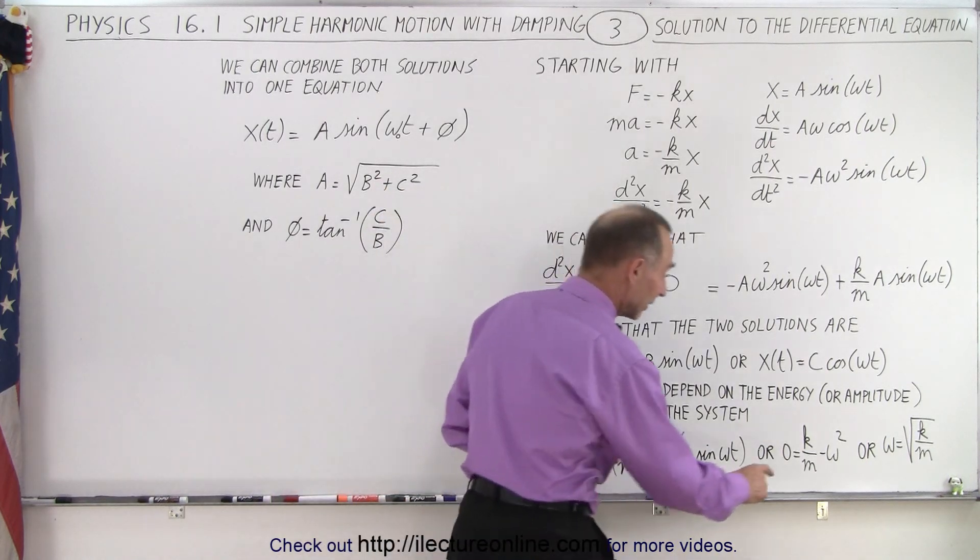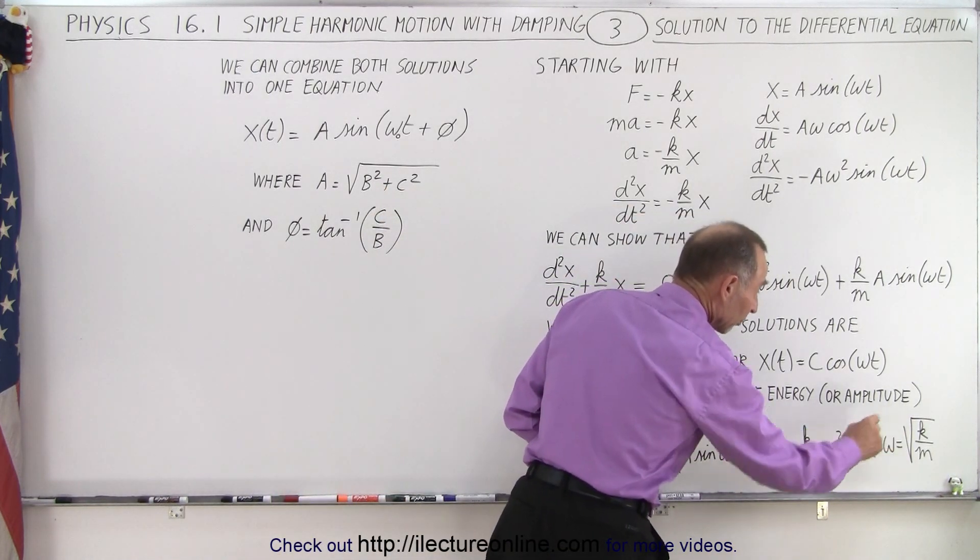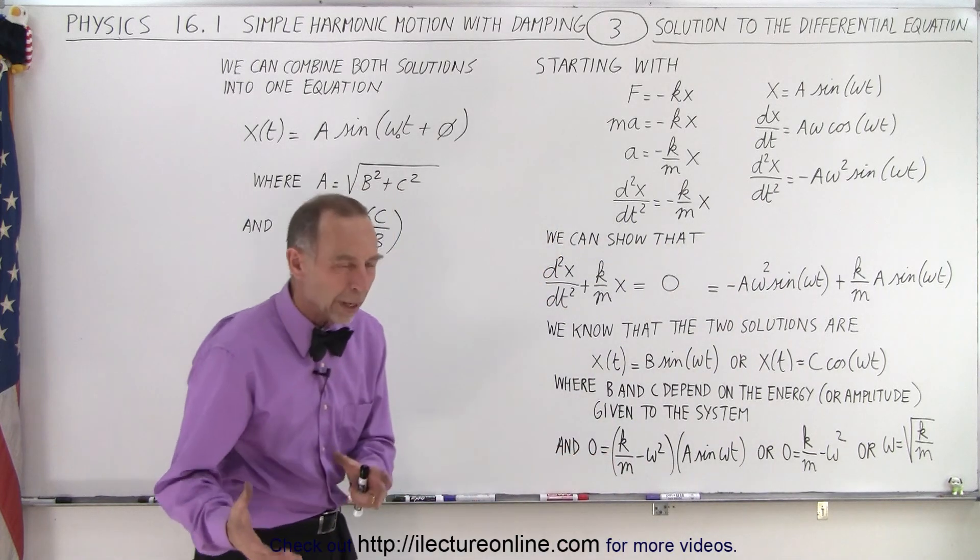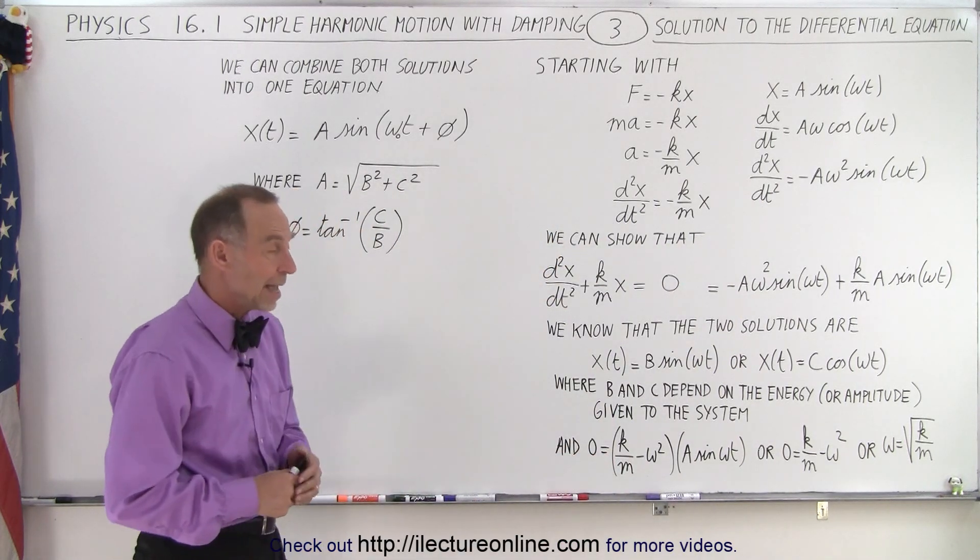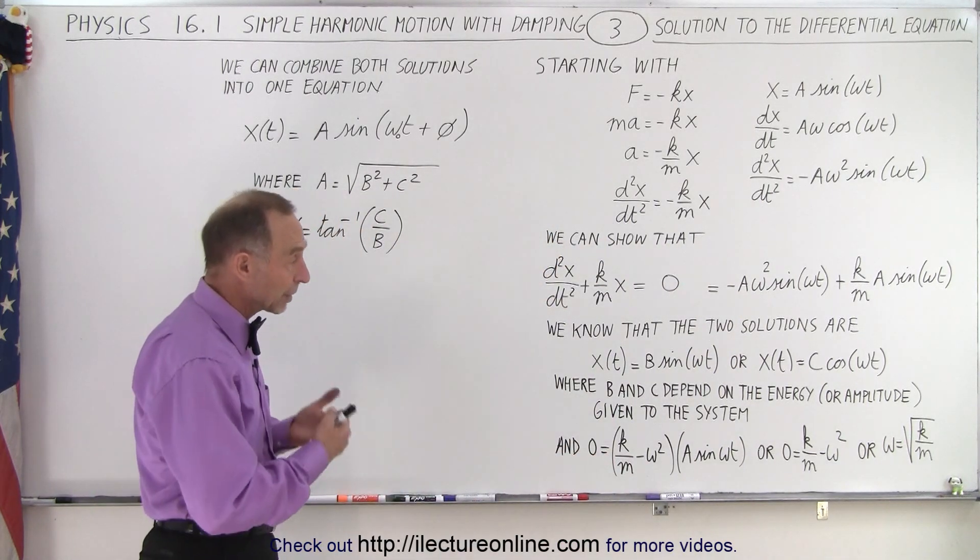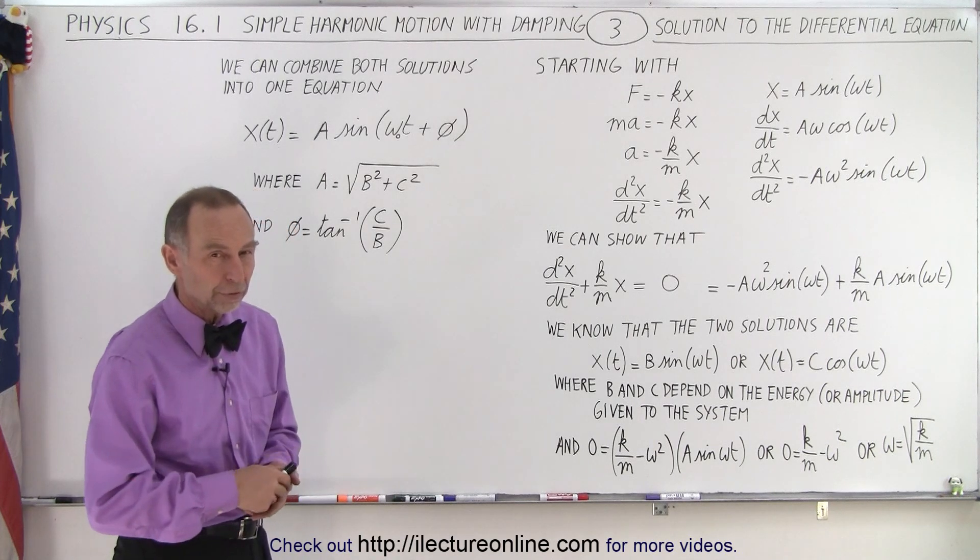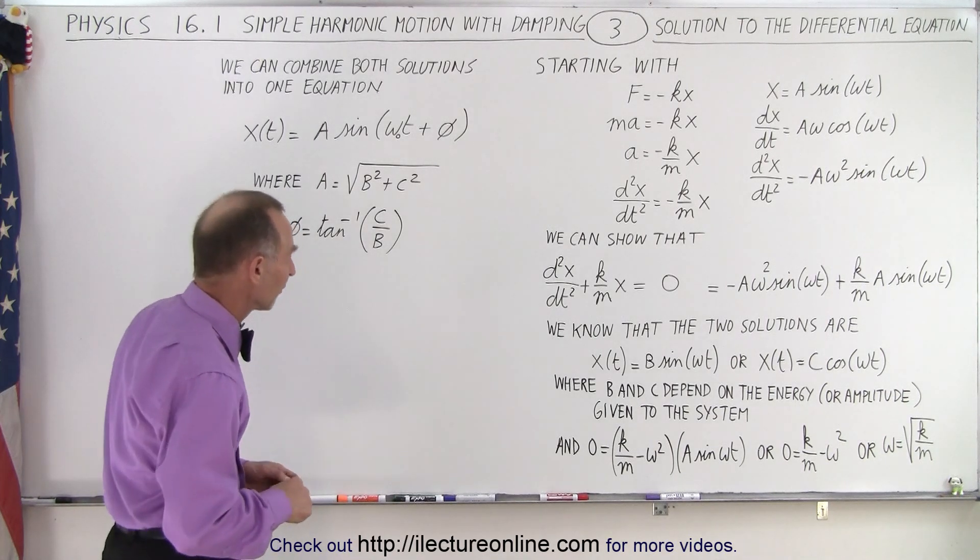If that equals zero, we can write that omega equals the square root of k over m. So that's another way of seeing that the angular frequency, or the angular velocity, is equal to the square root of the spring constant divided by the mass of the object.